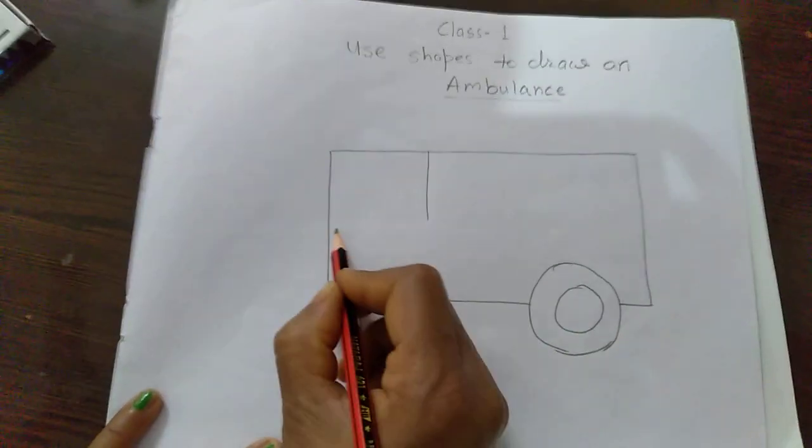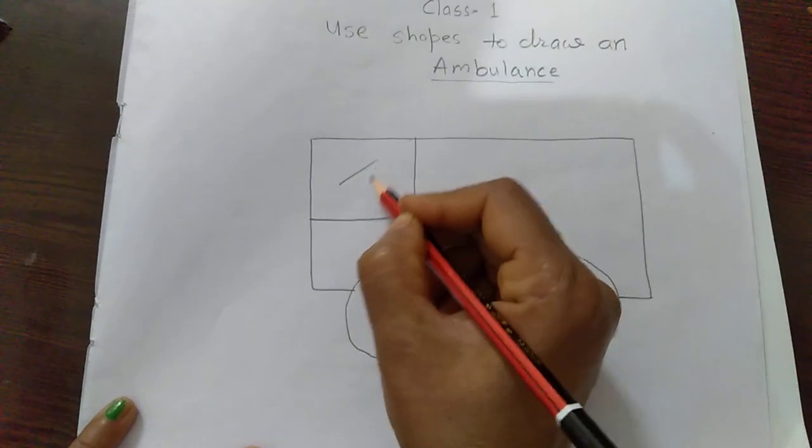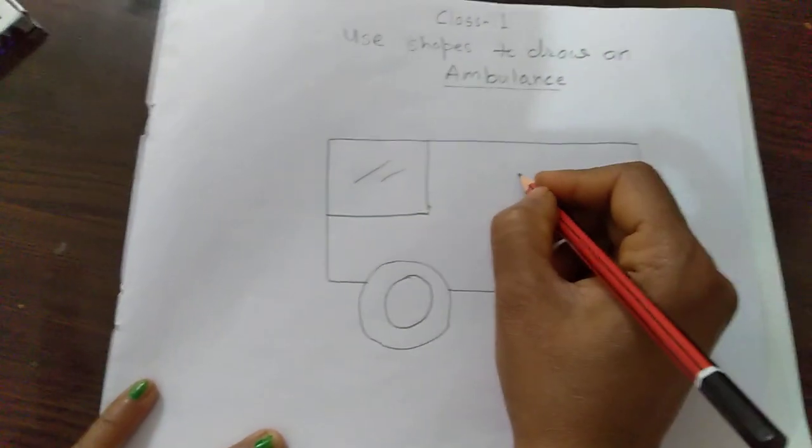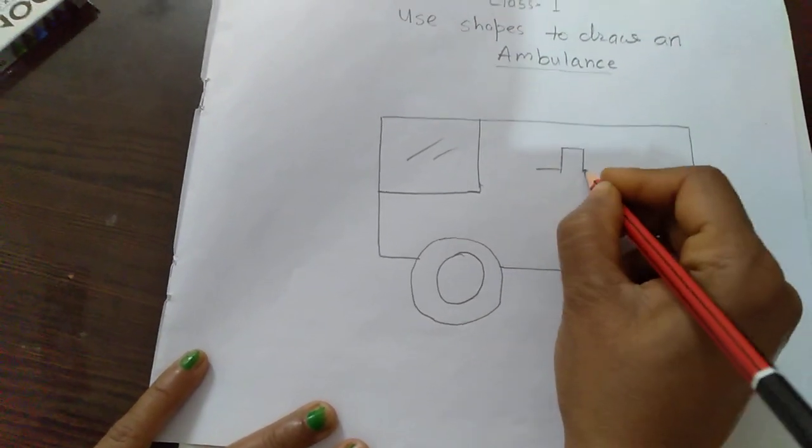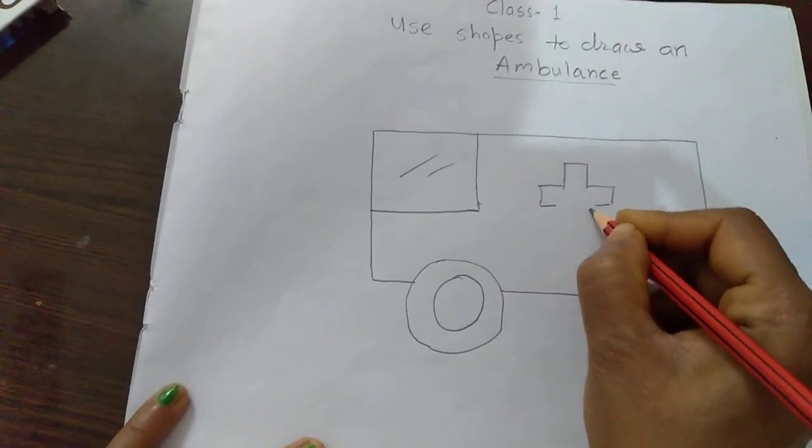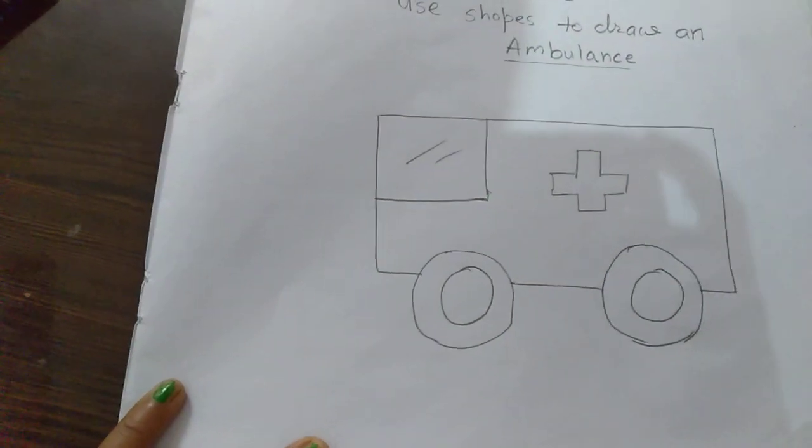Ambulance window, glass window, front window. Ambulance pe kya hota hai? Plus. Red color ka cross. Jis se humi pata chalta hai ki yeh ambulance hai. Done.